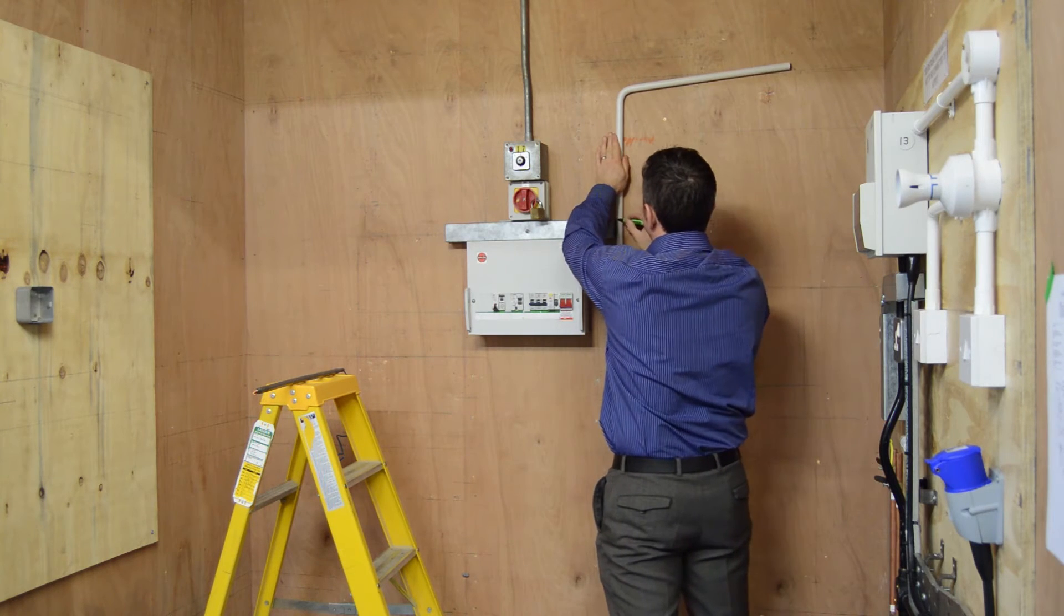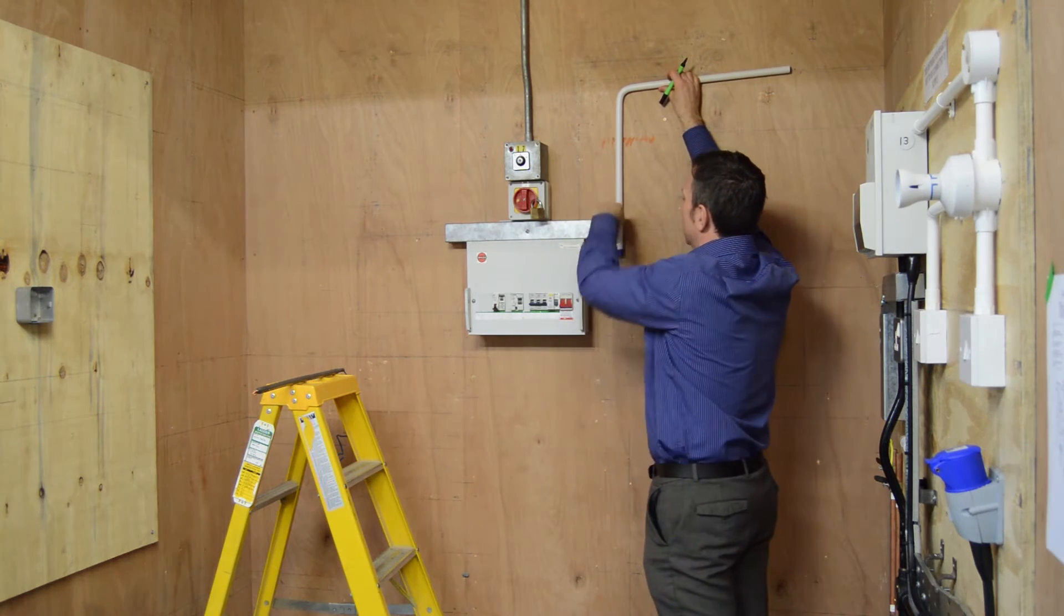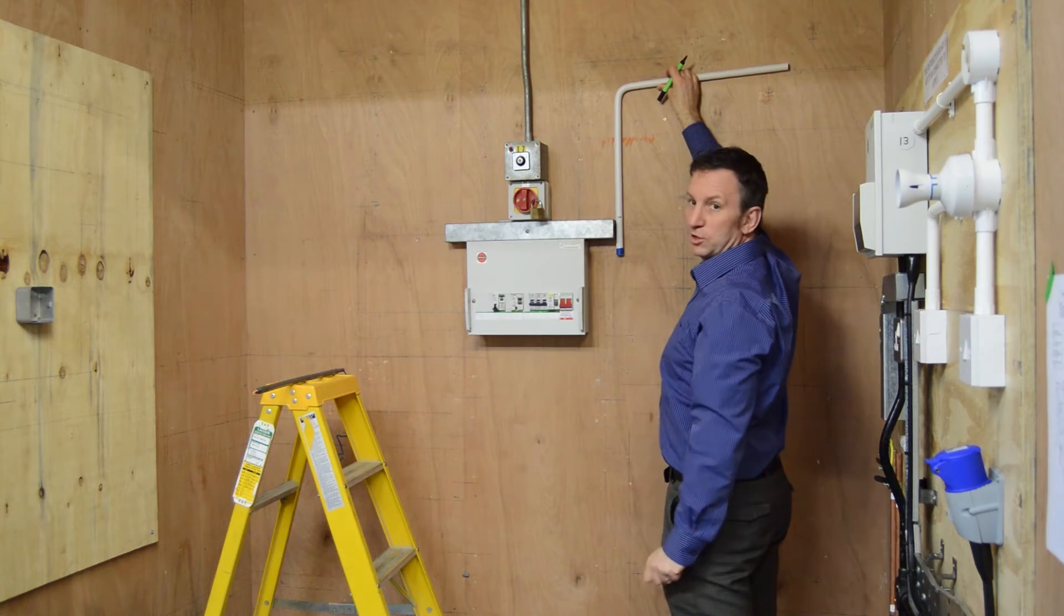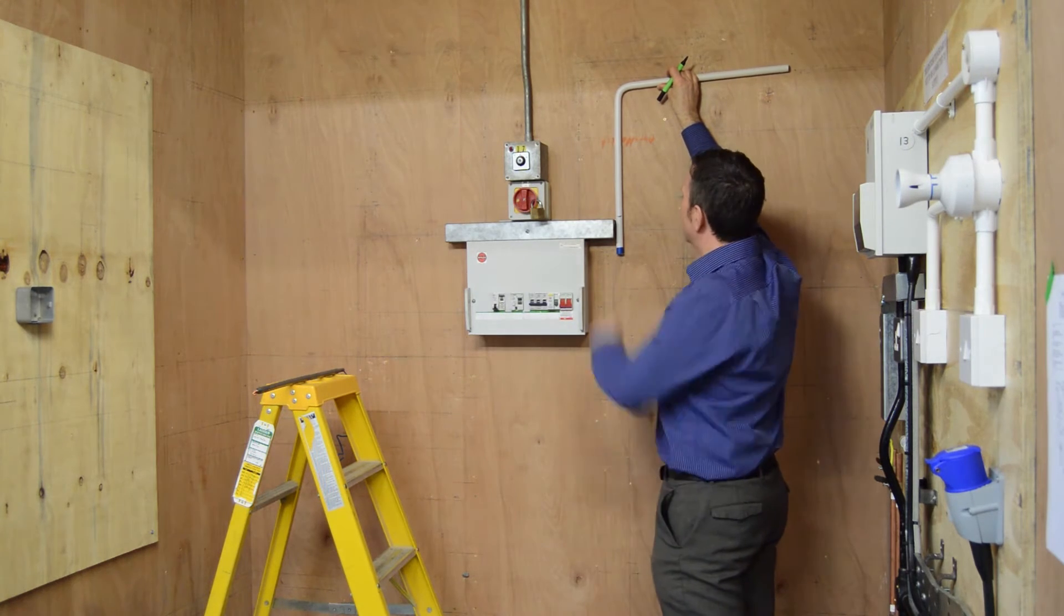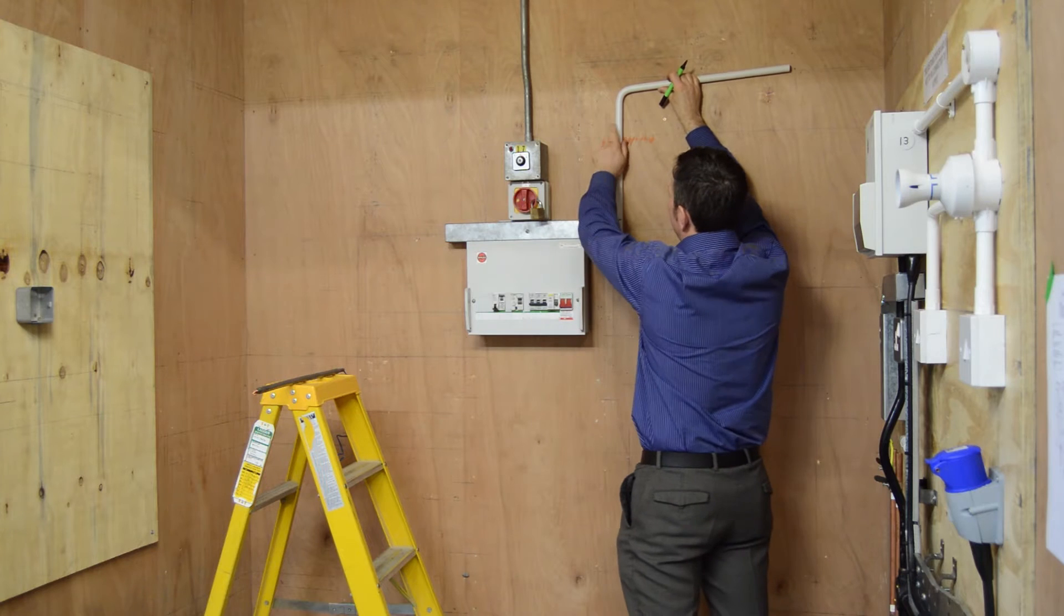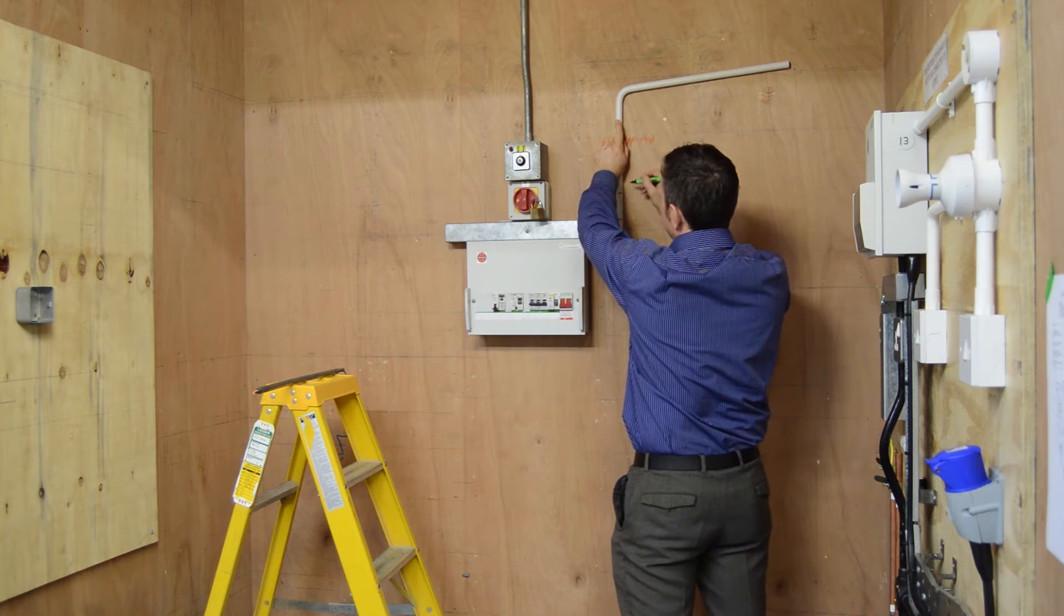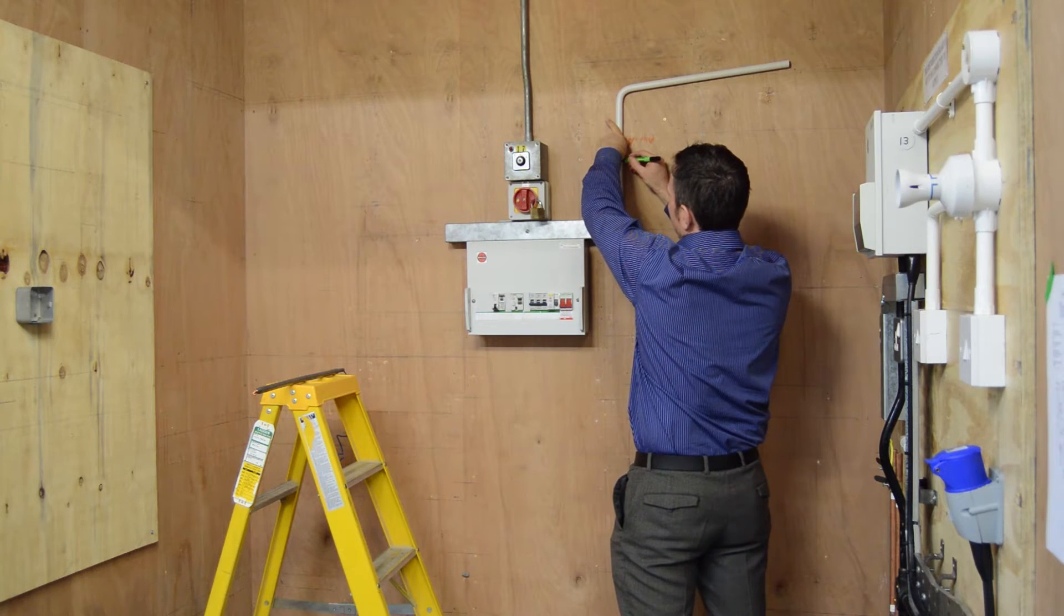So once we've done that, we've put our first mark which is where the conduit touches the top of the metal trunk. We then measure 100mm up, I'll just gauge it today, and then another 100mm up.